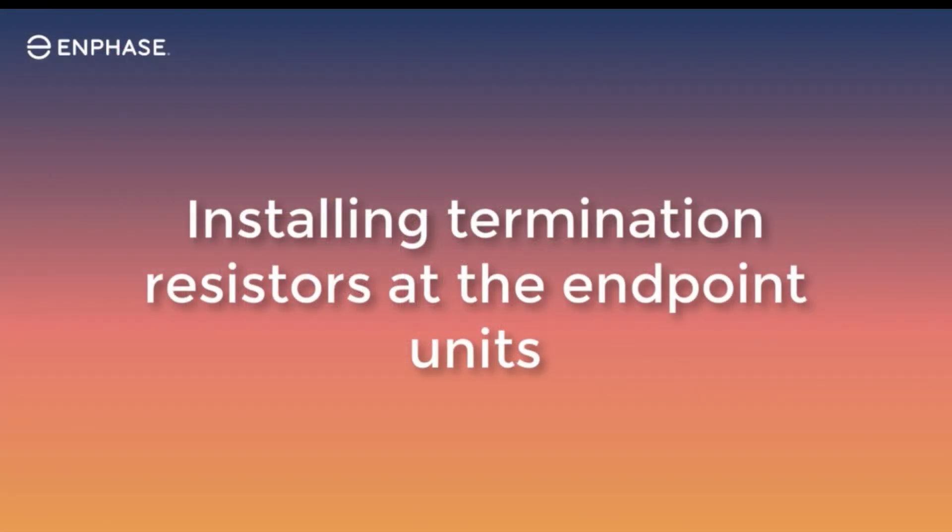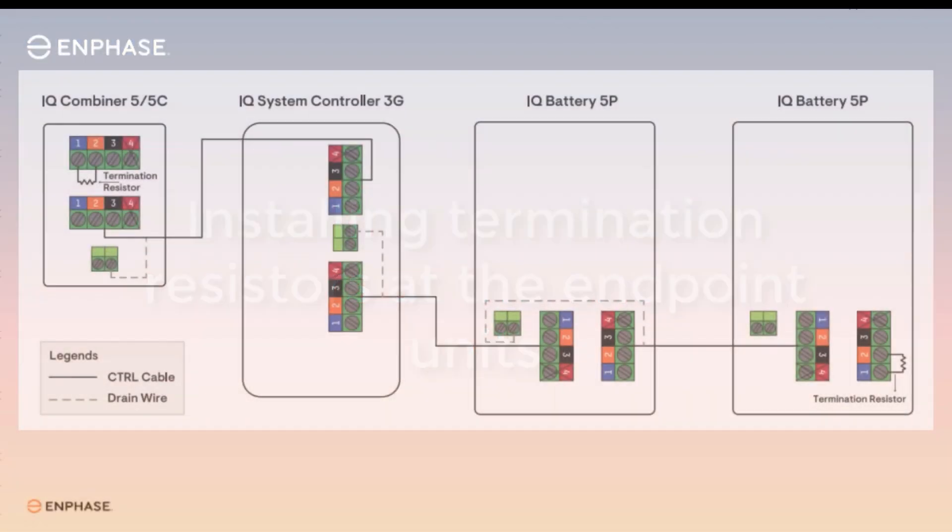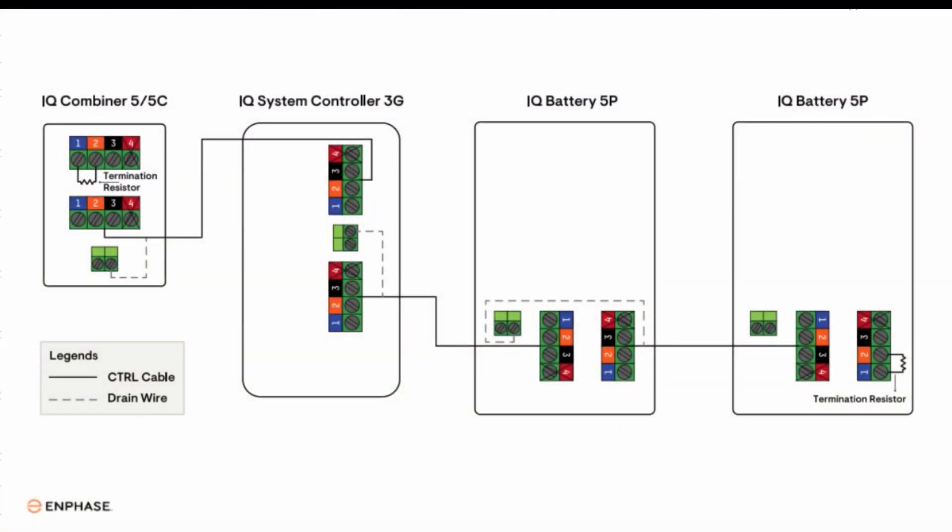Terminating endpoints in the control wire system. Since the control cables in a system is wired in a daisy chained layout, there will always be open control cable ports on the first device and last device in the chain. These are endpoint devices.